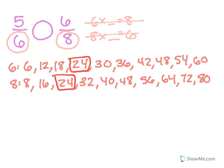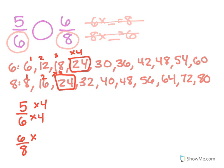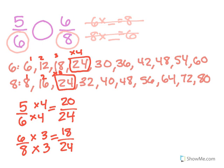What do I have to multiply 6 by to get to 24? It's 1, 2, 3, 4 — so that means to get this equivalent fraction, I'm going to multiply 5 sixths by 4. For 8, it's 1, 2, 3 — so I'm going to multiply 6 eighths by 3. Remember, the whole point of this is to get my denominators to be the same. 6 times 4 is 24. 8 times 3 is 24. My denominators are now the same, so now I just have to find my new numerator. 5 times 4 is 20. 6 times 3 is 18.